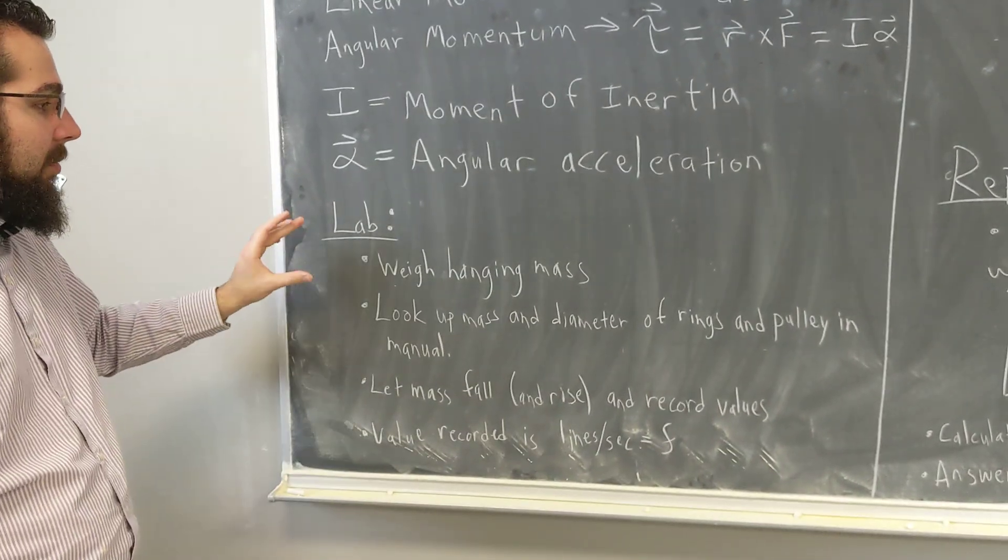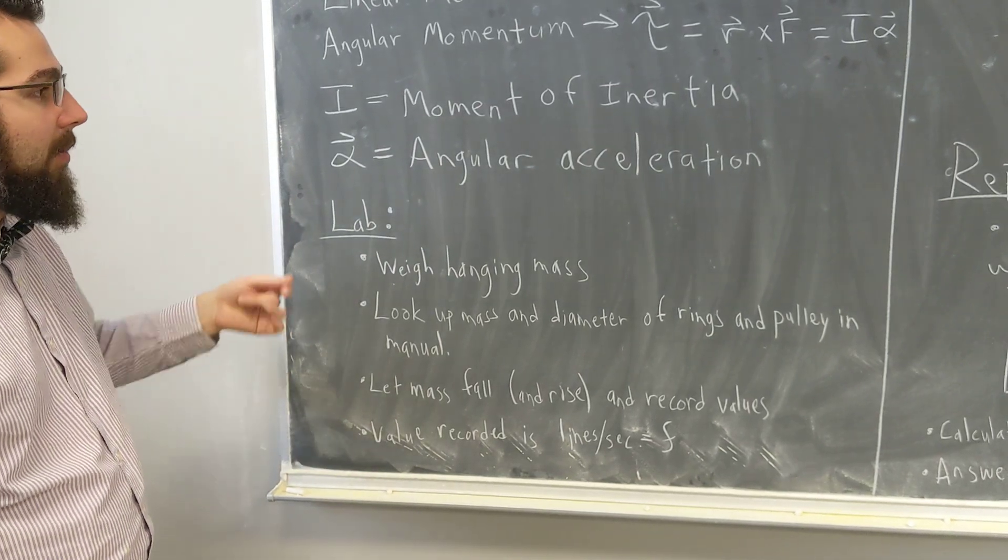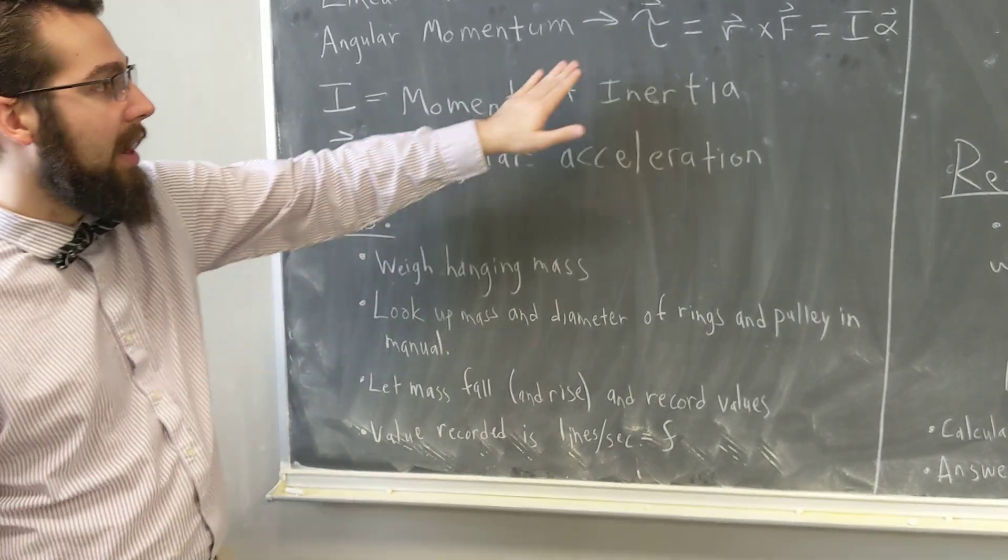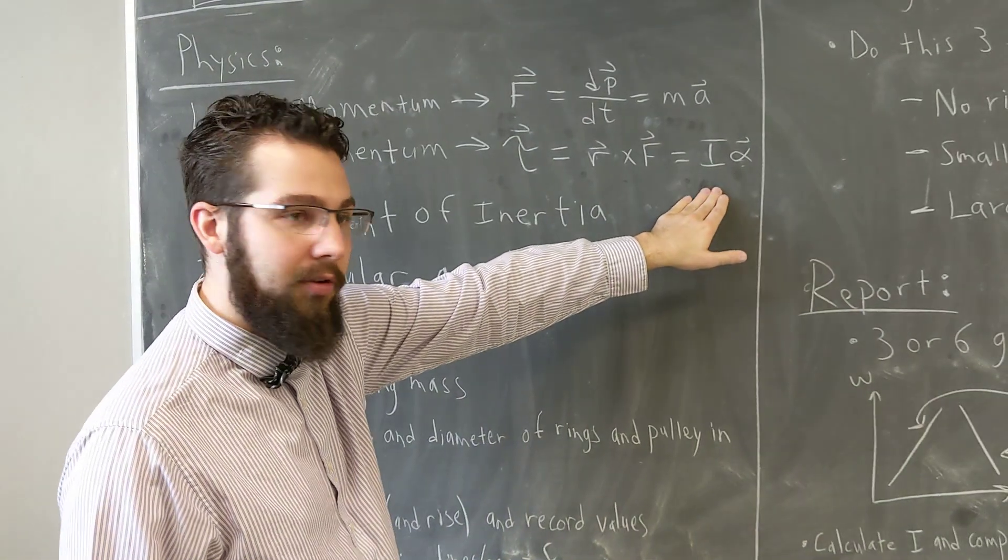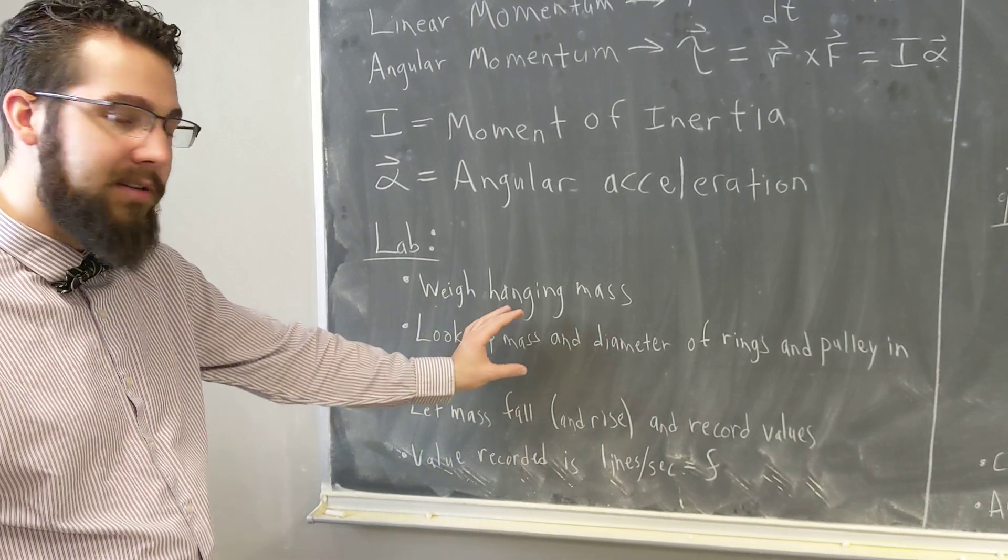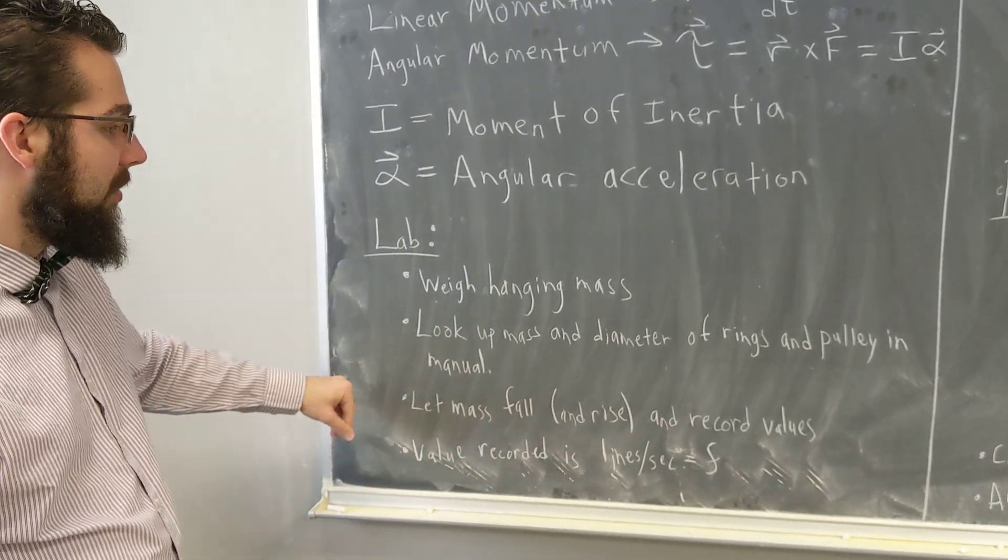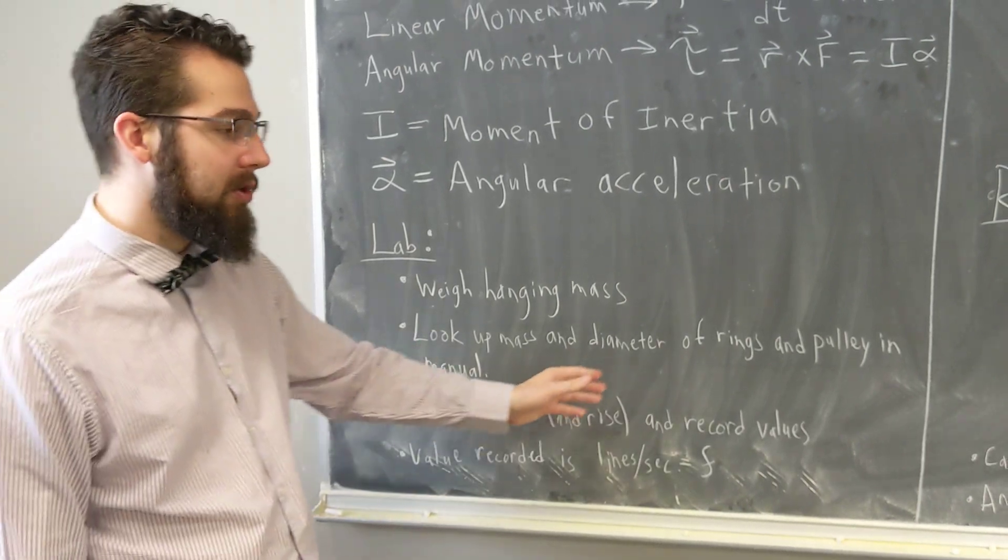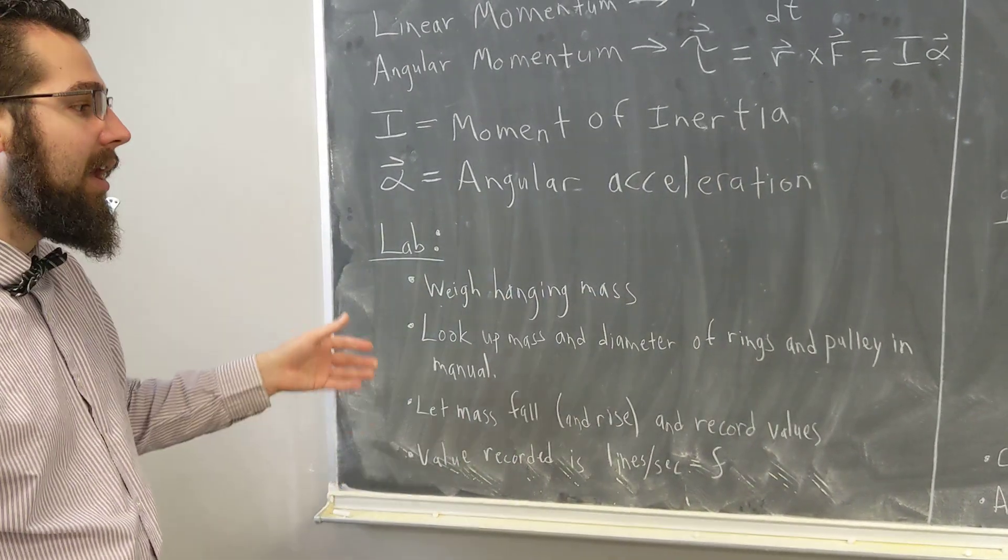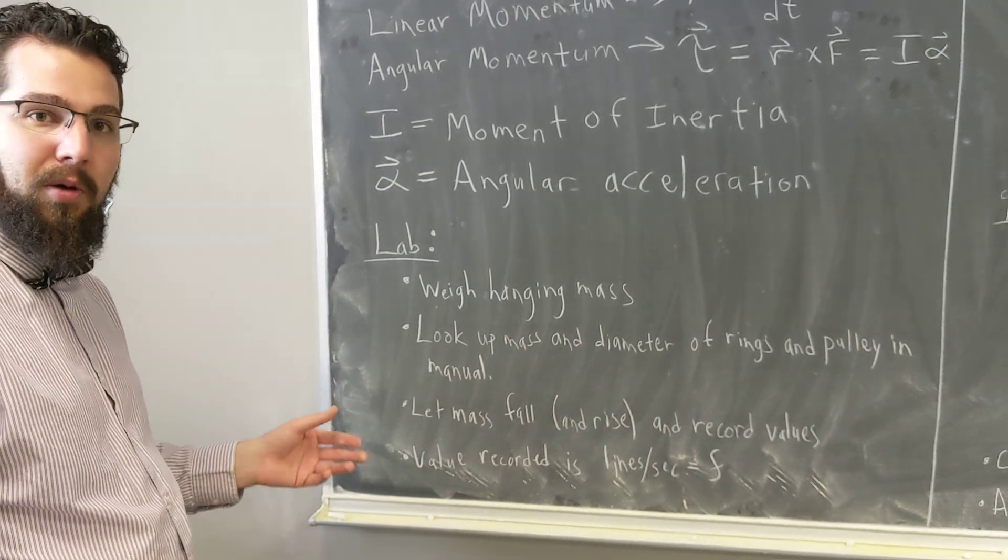In this lab, we'll have some discs and a hanging mass. We'll let our hanging mass fall, and as it falls it will pull on the disc, providing a torque and giving an angular acceleration. Then we'll put different objects like rings on top of this platform, which will change its moment of inertia. We'll calculate the moment of inertia of the rings beforehand, and with our data we'll calculate our measured moment of inertia.